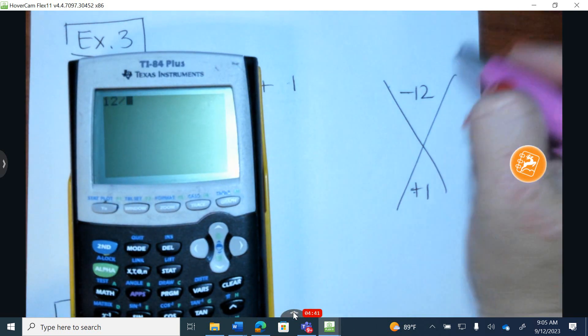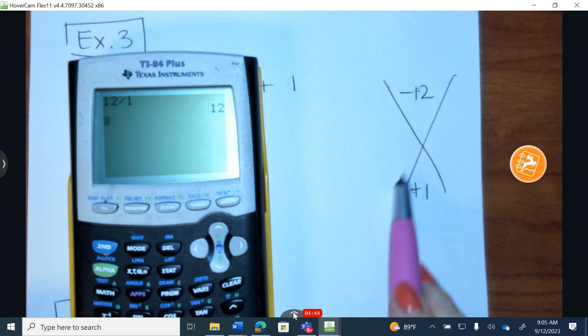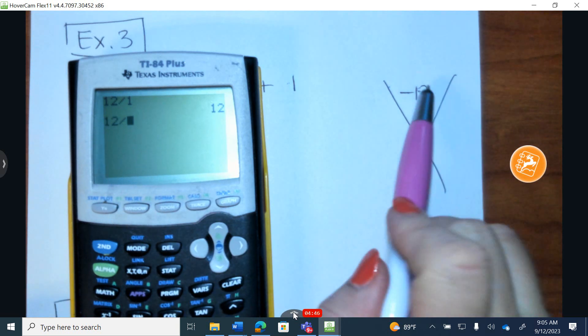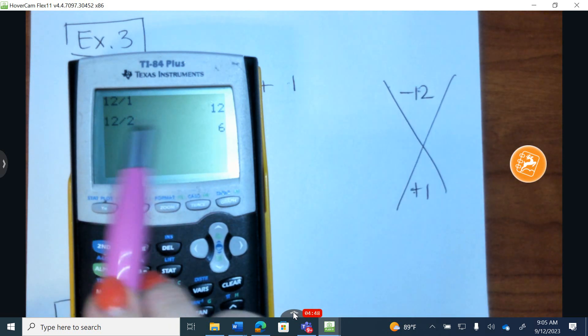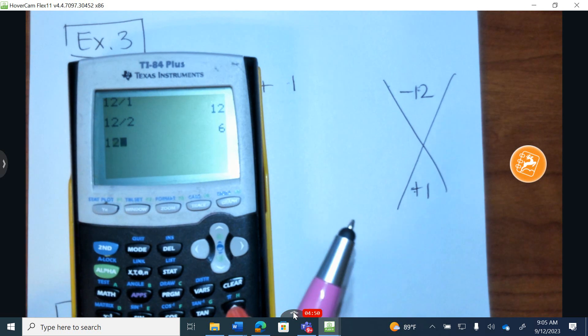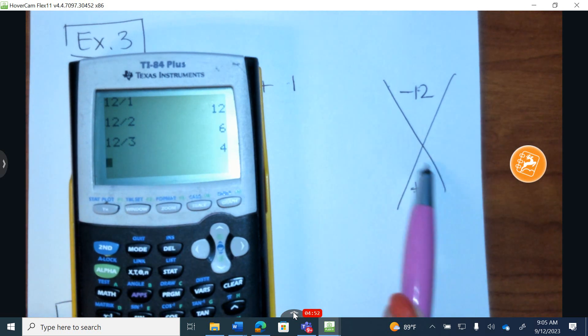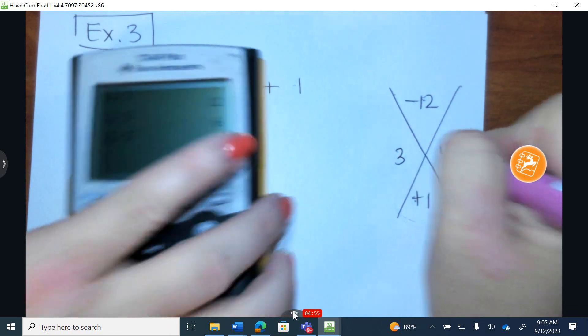I take 12, because I'm always starting with this number, and divide it by 1. 1 and 12 do not somehow give you 1. I take 12, divide it by 2. Does 2 and 6 give you 1? No. I take 12, I divide it by 3. 3 and 4 can get you a positive 1. So I write down 3 and 4.